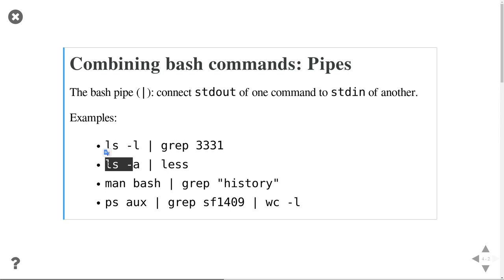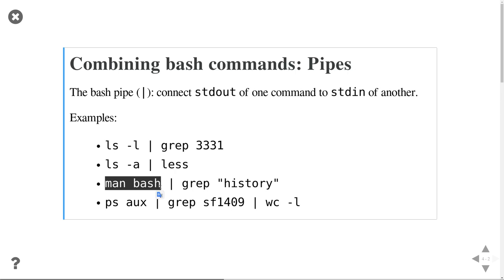The next example: I'm interested in the bash command called history and want to learn more about it. I call up the manual page of bash and use the grep command to filter lines containing a certain key. So I grep that manual page for the name 'history', and I get all the lines in the manual page of bash that contain that name.